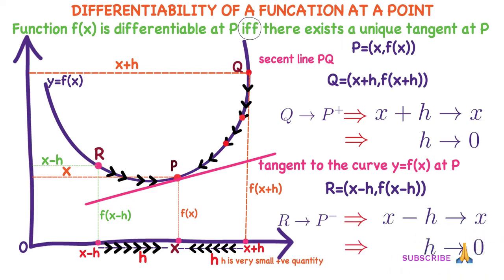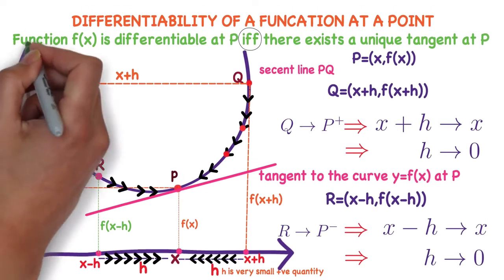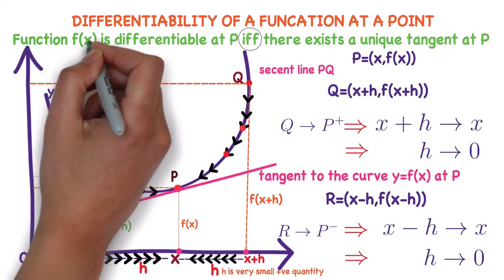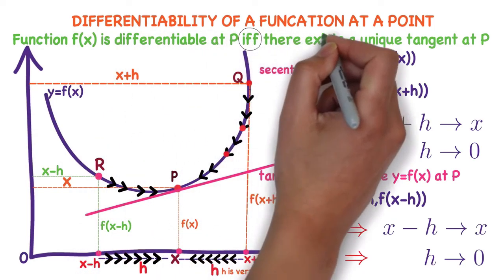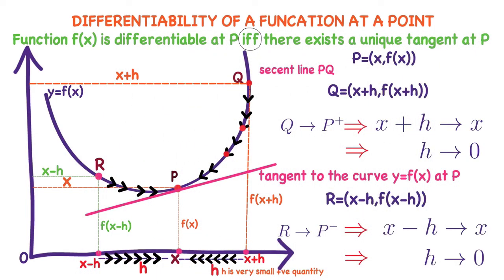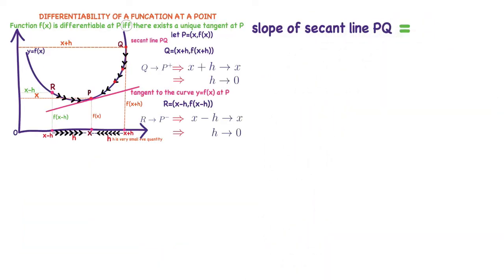So I will conclude. When we say a function f(x) is differentiable at a point p, it means there exists a unique tangent to the curve y = f(x) at point p — both secant lines from the right and from the left become the same tangent.